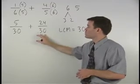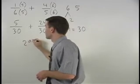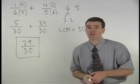Five over thirty plus twenty-four over thirty is twenty-nine over thirty, which is our final answer.